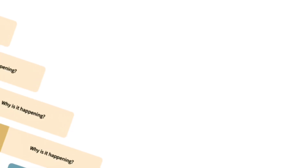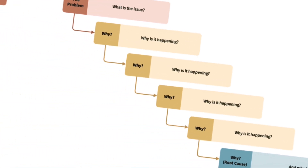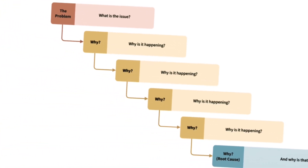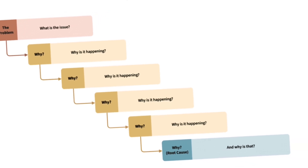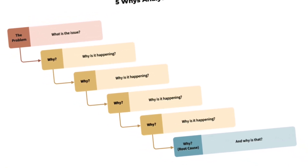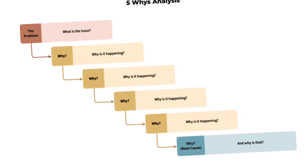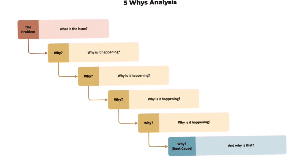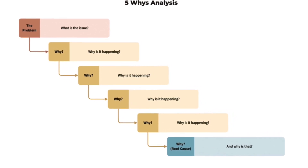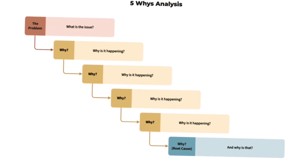How is the 5 Why's used? First, identify the problem — start with a clear statement of the problem you want to analyze. Then ask why the problem occurred and write down the answer. Take the answer from the first why and ask why again. This process is repeated multiple times, typically 5, but it can be more or fewer depending on the situation until the root cause is identified.